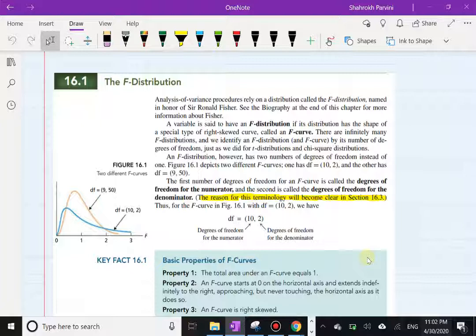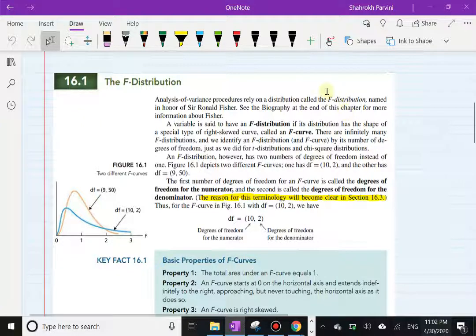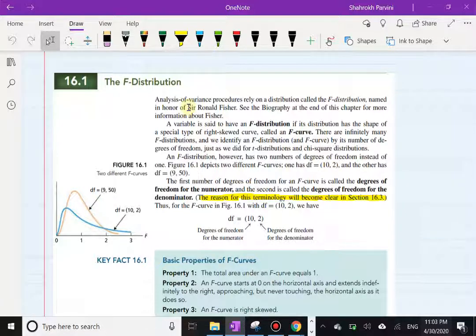So this F distribution—the word F here stands for Fisher—is named in honor of Sir Ronald Fisher. The distribution was discovered in the early 1900s.